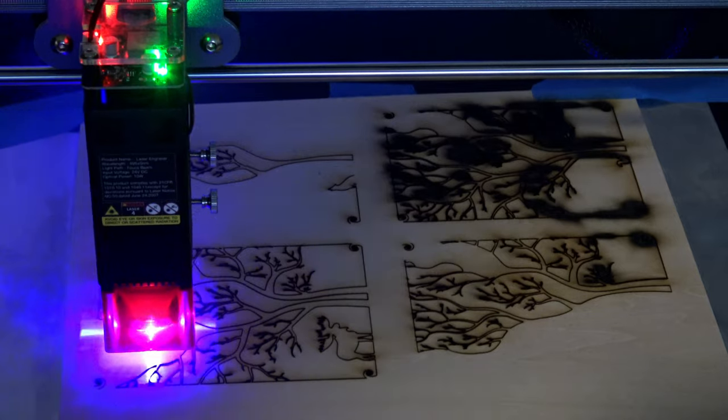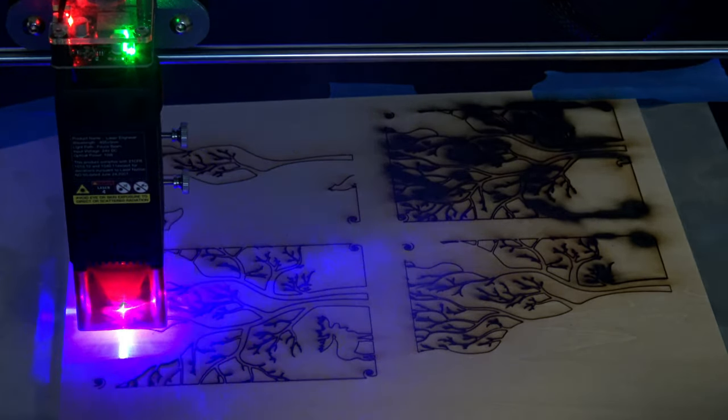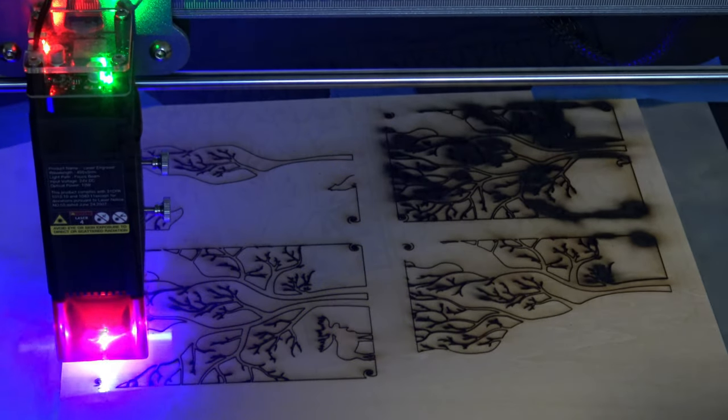I had the wood placed directly on the aluminum sheet protecting my table, and that sheet started to warp. That pushed the wood up and out of the focus spot of the laser.